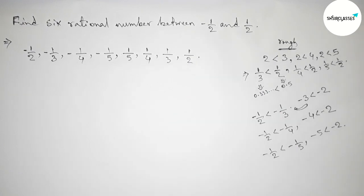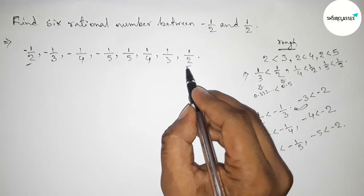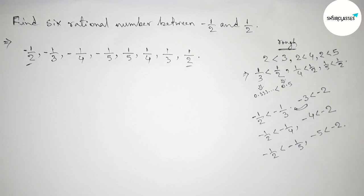So between minus 1 by 2 and 1 by 2, these are the required rational numbers.